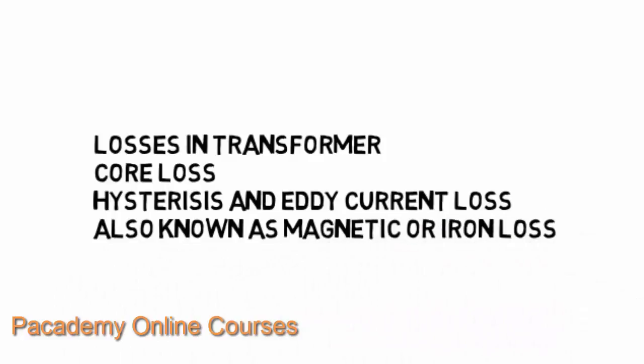The different losses in the transformer are core losses, which are also known as magnetic losses. These losses happen due to the setting up of magnetic field or flux in the core and the windings. These losses include hysteresis and eddy current losses, and are also known as iron losses.